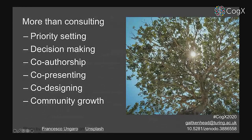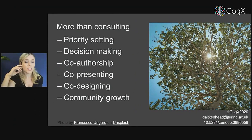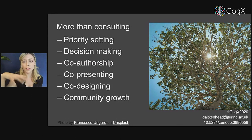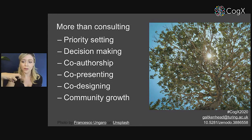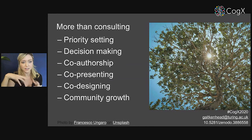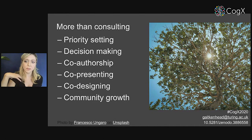Participatory science is much more than just consulting. It involves priority setting, decision making, co-authorship, co-presenting, co-designing, and community growth. In all of these areas, autistic people are not just subjects of research — they are directing the research. It's redressing quite an entrenched power imbalance that emerges in a lot of autism research, and I think that's hugely important.